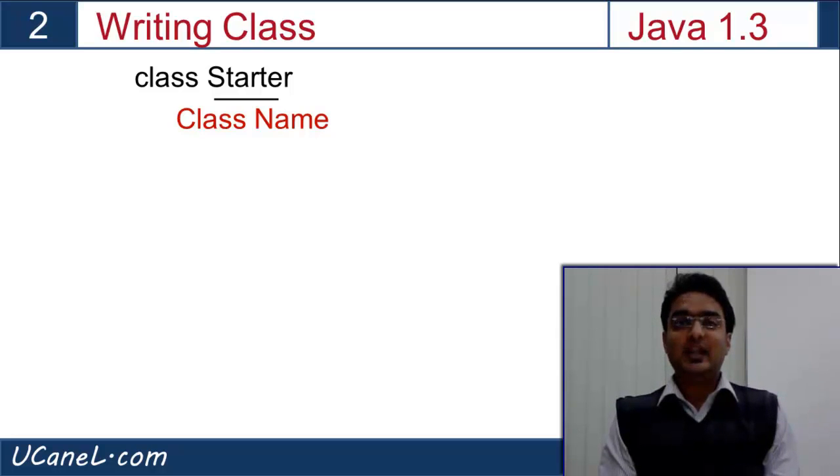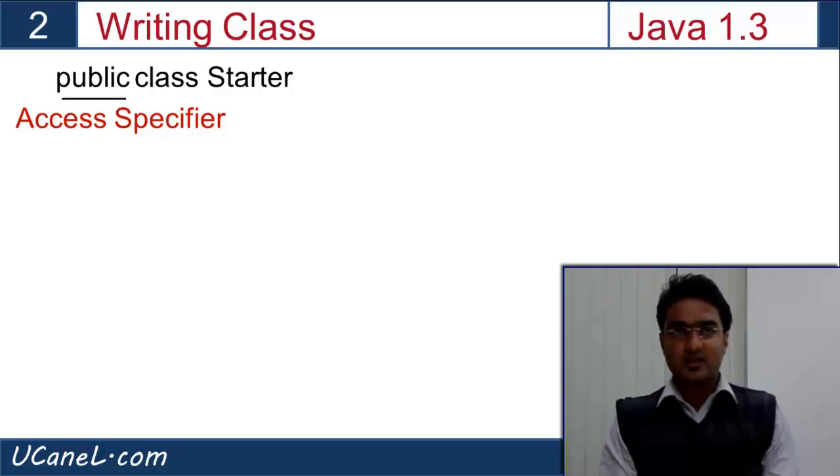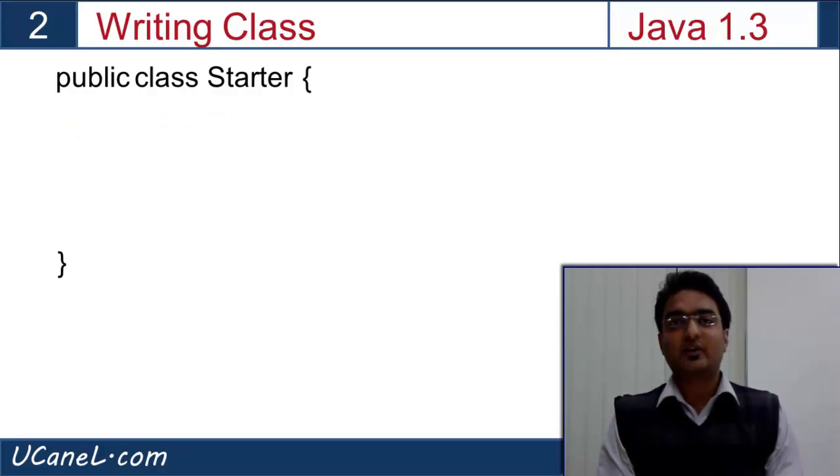Now, to make this class accessible for everyone, we will write the keyword public. We will study access specifiers in detail in my upcoming session. For now, just understand that we made this class publicly available. And finally, the parentheses to define our class body.